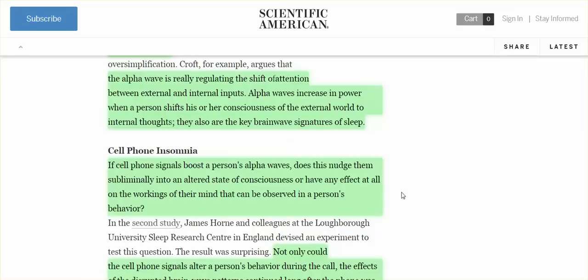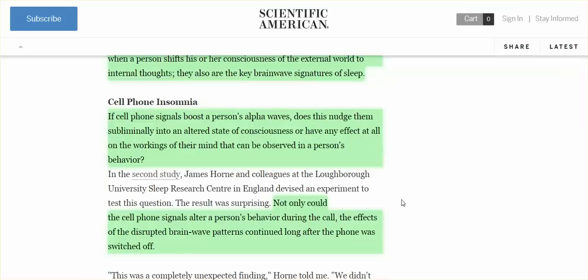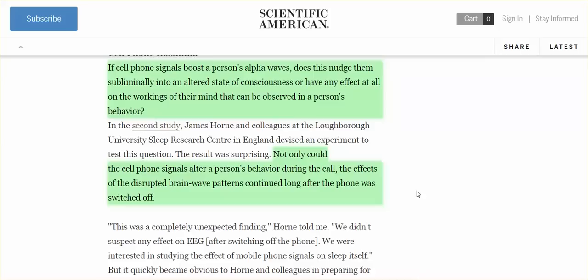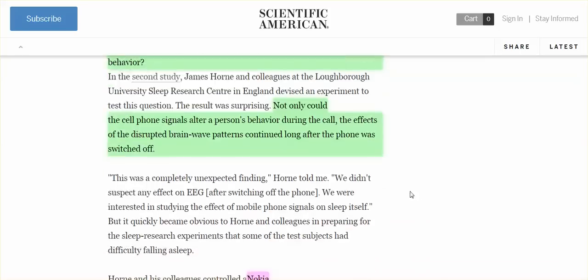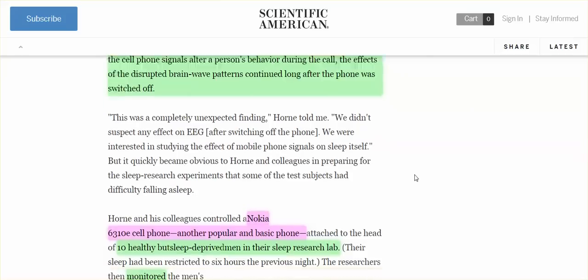Cell phone insomnia. If cell phone signals boost a person's alpha waves, does this nudge them subliminally into an altered state of consciousness or have any effect at all on the workings of their mind that can be observed in a person's behavior? Yes. And not only could the cell phone signals alter a person's behavior during the call, the effects of the disrupted brain wave patterns continued long after the phone was switched off.